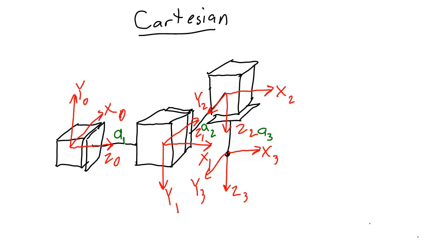Now I still need to label the joint variables. For prismatic joints, the joint variable will just be pointing in the same direction as the z-axis — the direction that the joint is going. I usually use the letter D for this. I'm going to call the first one D1 because that variable affects the 1 axis, then D2, and D3 will be pointing down. And this is our complete kinematic diagram for the Cartesian manipulator.